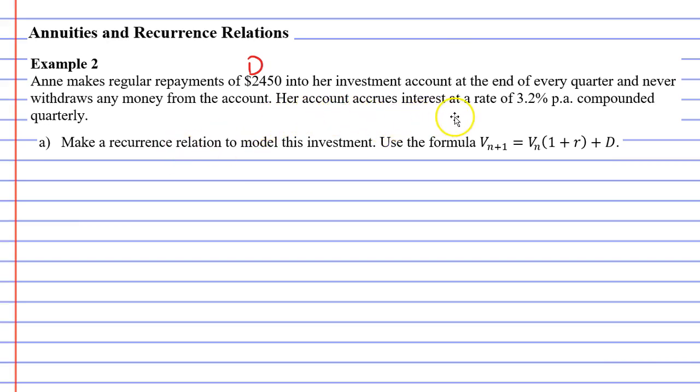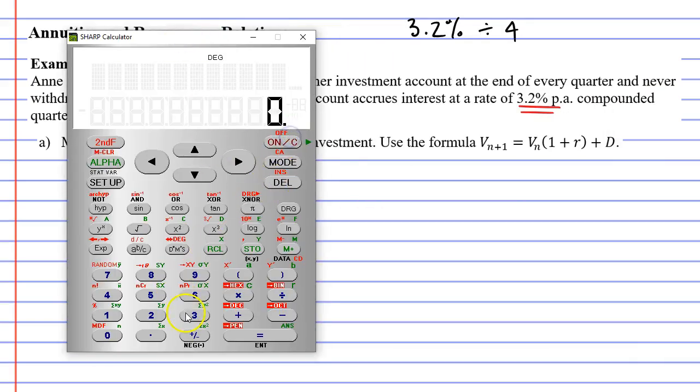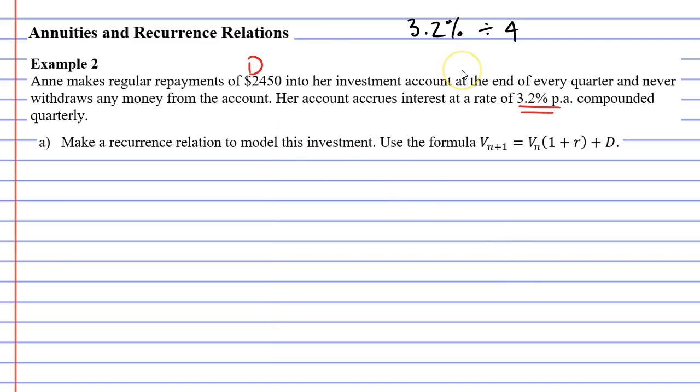It then says that her account accrues interest at a rate of 3.2% per annum, compounded quarterly. We need to have a look at that because our interest rate needs to change. It's 3.2% per annum, but we've got to make it a quarterly interest rate. There are four quarters in a year, so we're going to take our 3.2% and divide it by four. 3.2 divided by four equals 0.8.